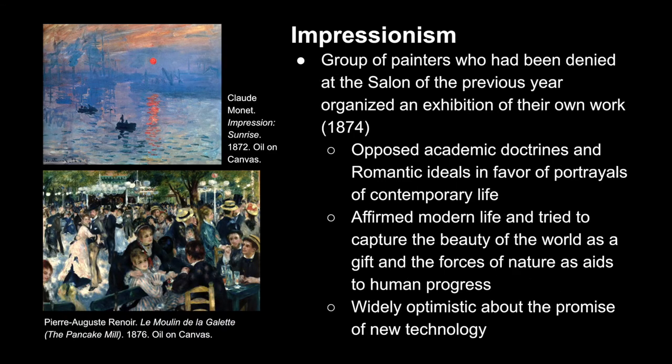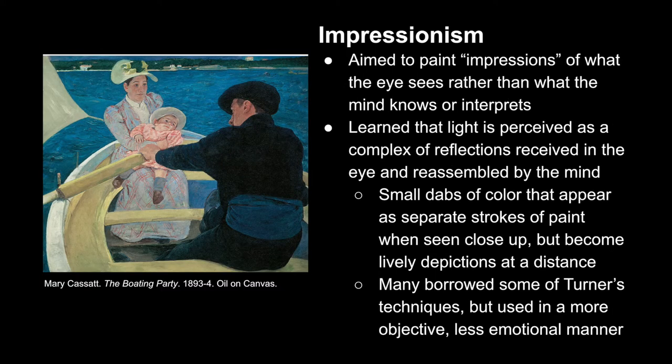The Impressionists began to show their work because they were rejected from the 1873 Salon and created their own exhibition the following year. Like the Realists, the Impressionists opposed academic doctrines in favor of depicting the contemporary world around them, affirming modern life, and seeking to capture the beauty of the world in individual moments. However, unlike the Realists, they were largely optimistic and hopeful about the promise of new advances within human-made society. In addition to nature — not in lieu of it — these artists aimed to capture the impressions of moments, painting what the eye sees and experiences directly, not what the mind knows or interprets.